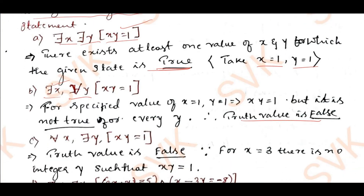Third: for all x, there exist y such that xy = 1. This is also false. The order has changed — instead of 'there exist x' it is 'for all x.' The reason: if x = 3, there is no integer y such that 3y = 1. Therefore the truth value is false.